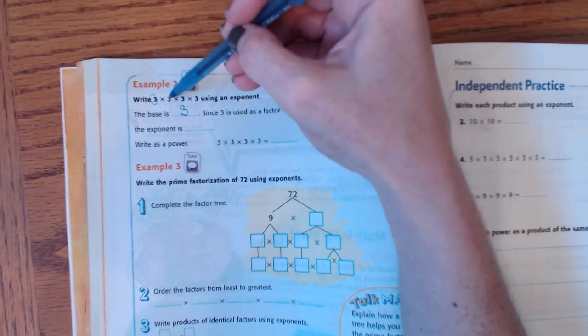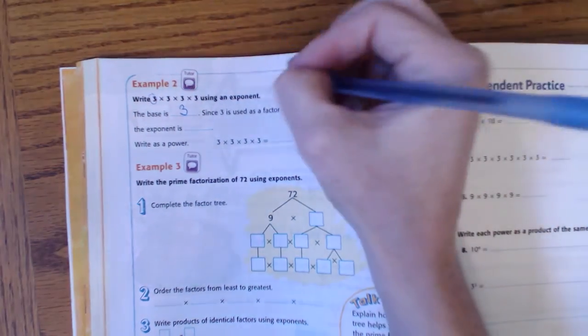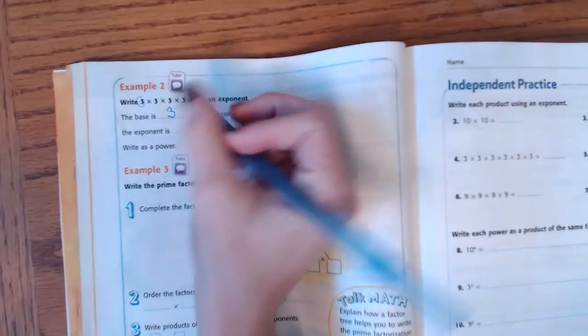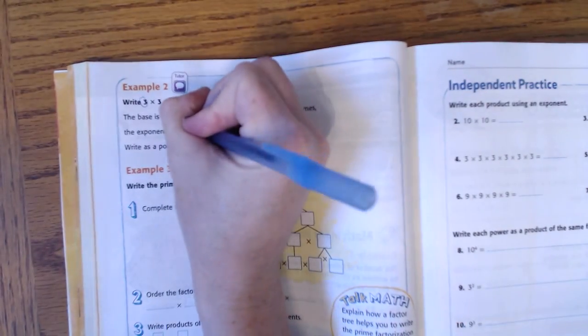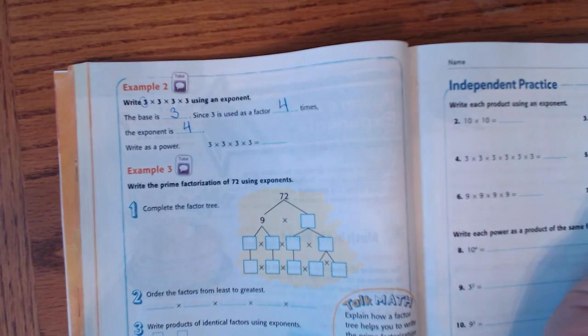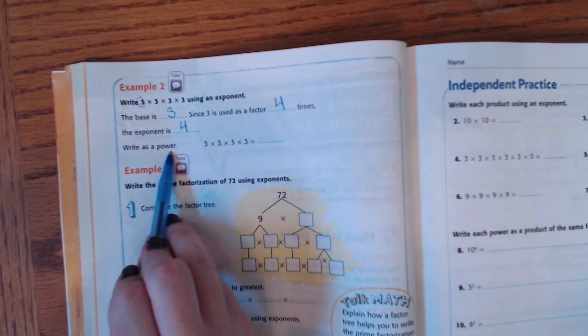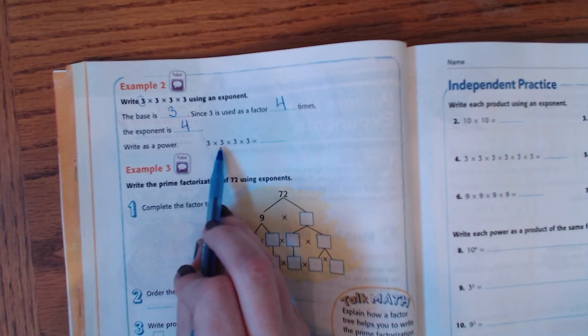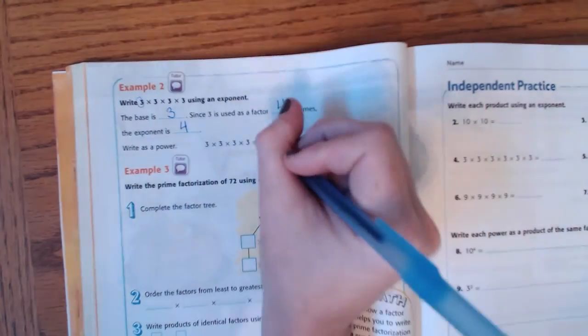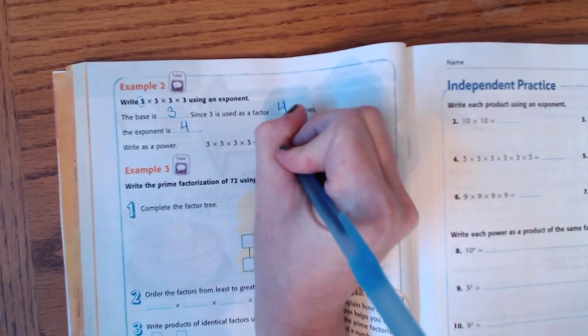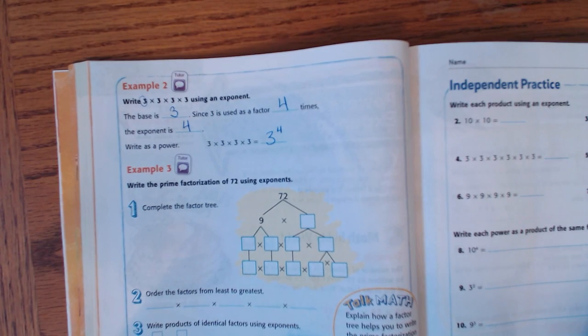Now, since three is used as a factor how many times? One, two, three, four times. I write this with an exponent of four. So, if I were to write this as a power, it would be three times three times three times three is three to the fourth power.